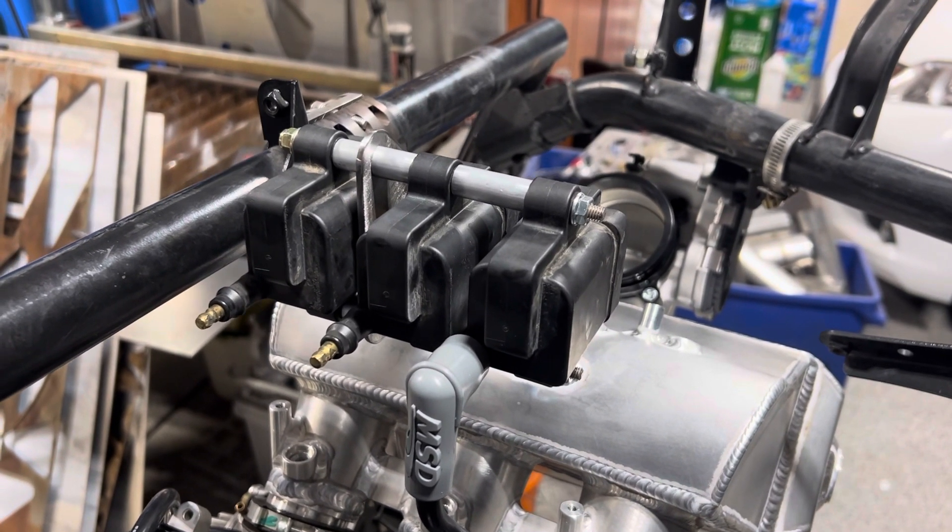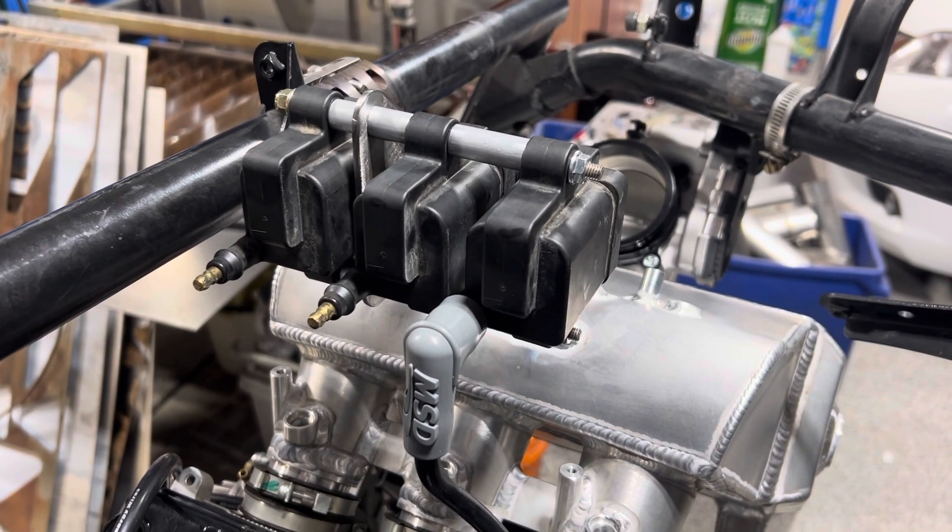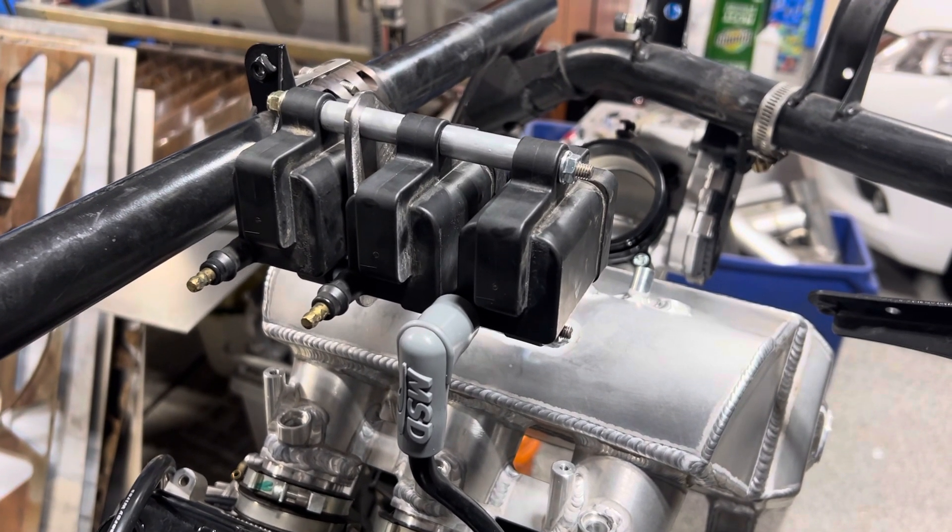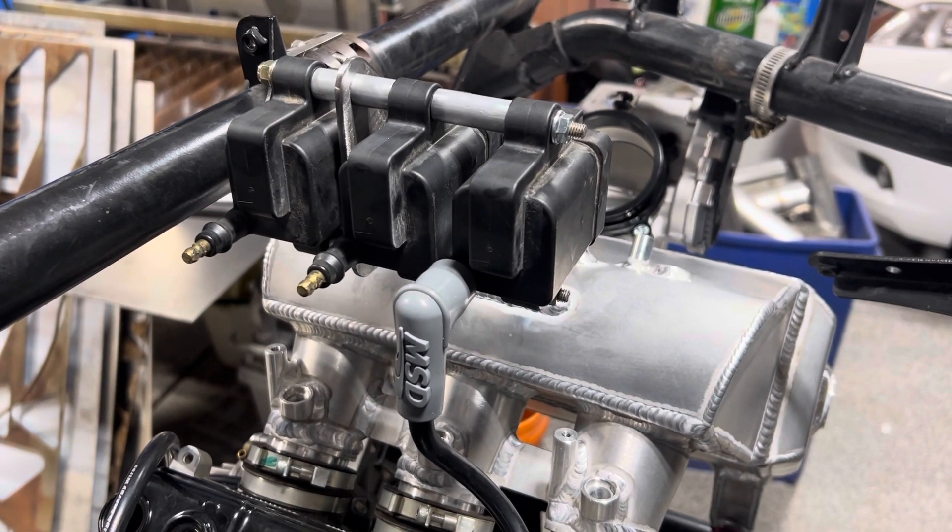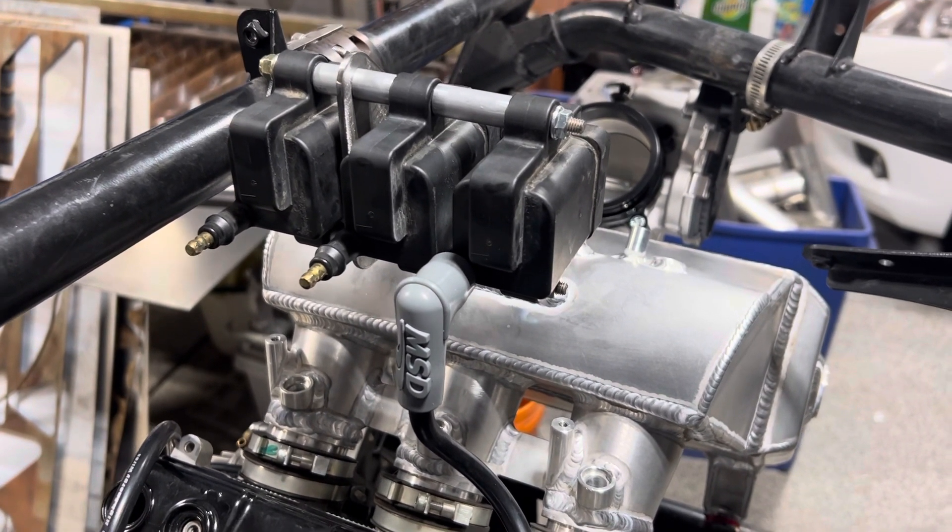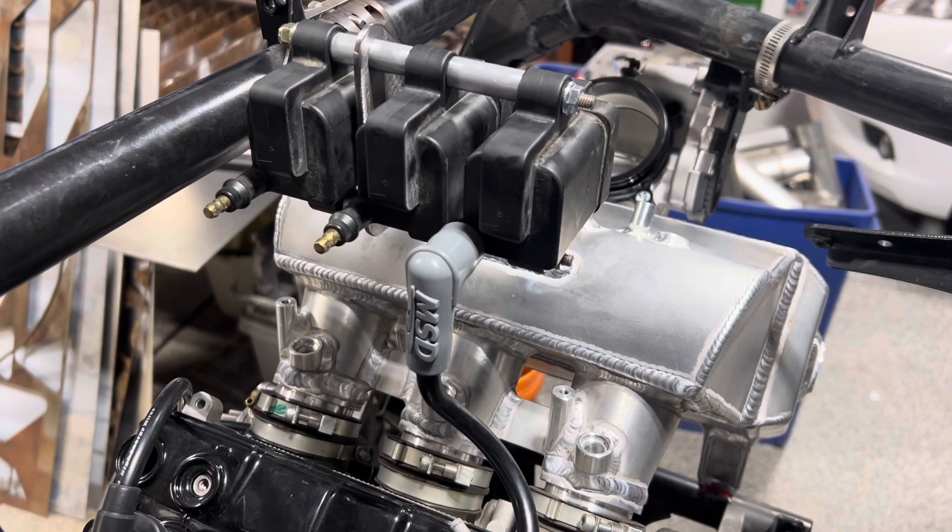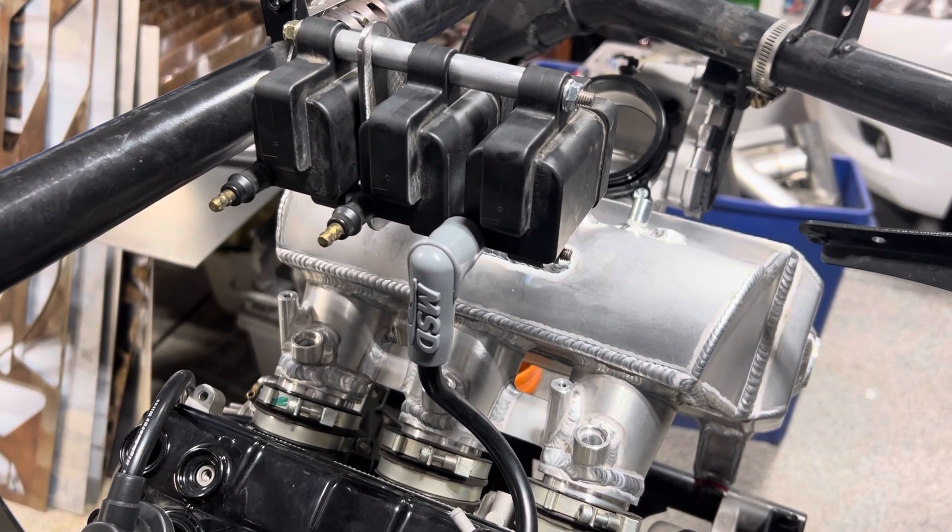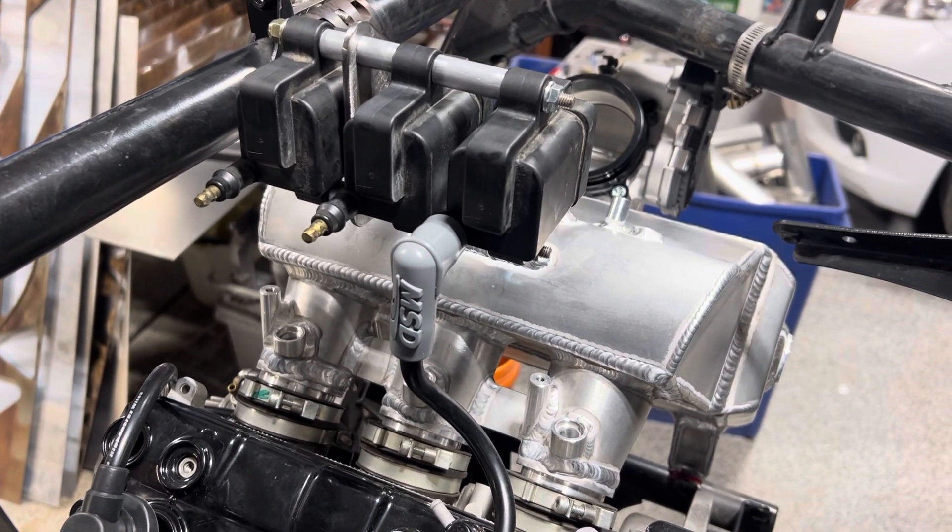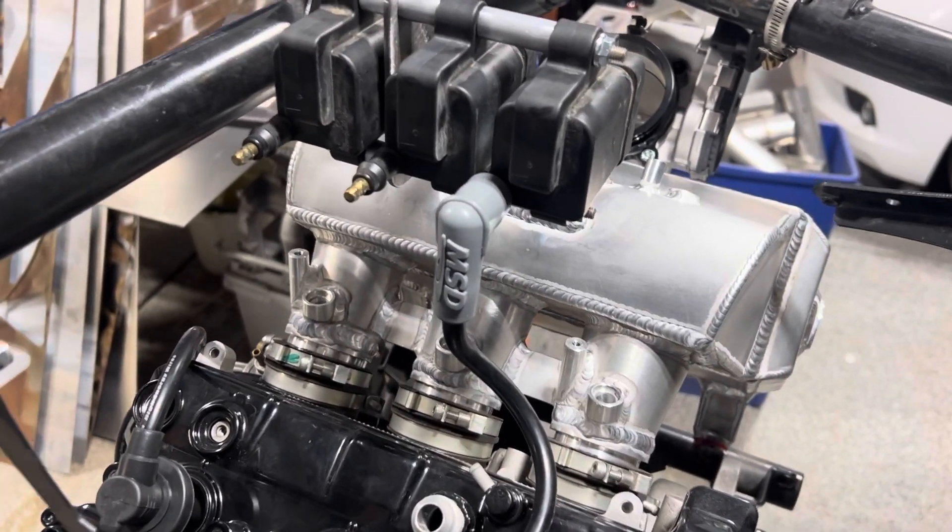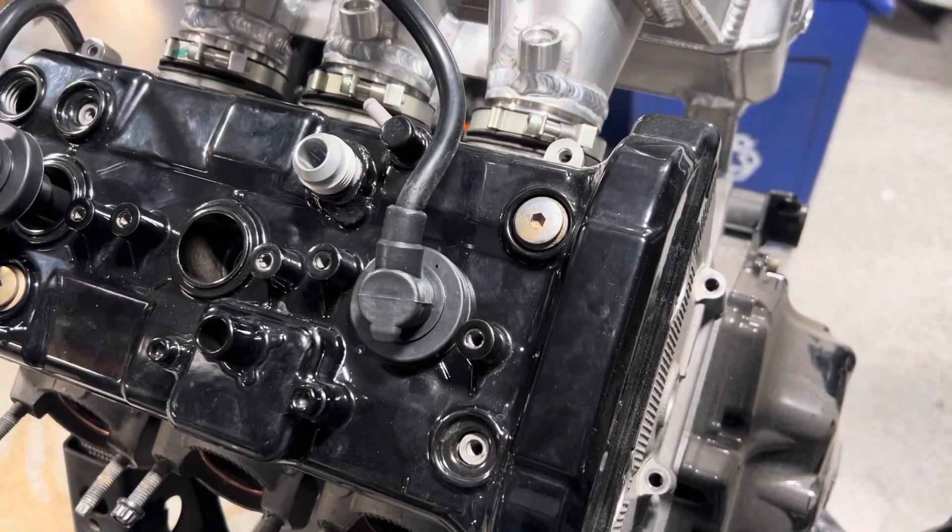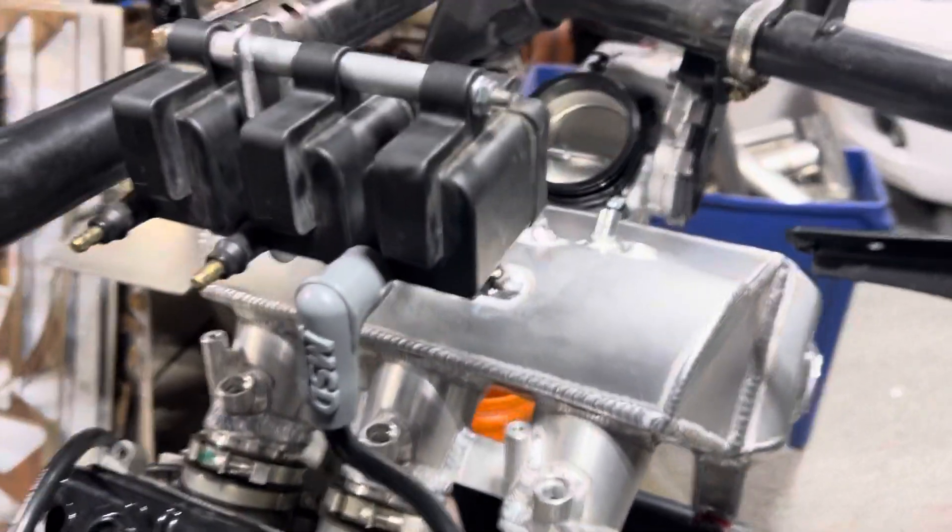You have to use the dump coil if you have an Emtron because that ECU has a built-in igniter. If you're running a MoTeC or Haltech or ECU Master, you have the option of running a smart coil. That's what we use with our M130 MoTeC. We're going to talk about how to get to the spark plug wire.